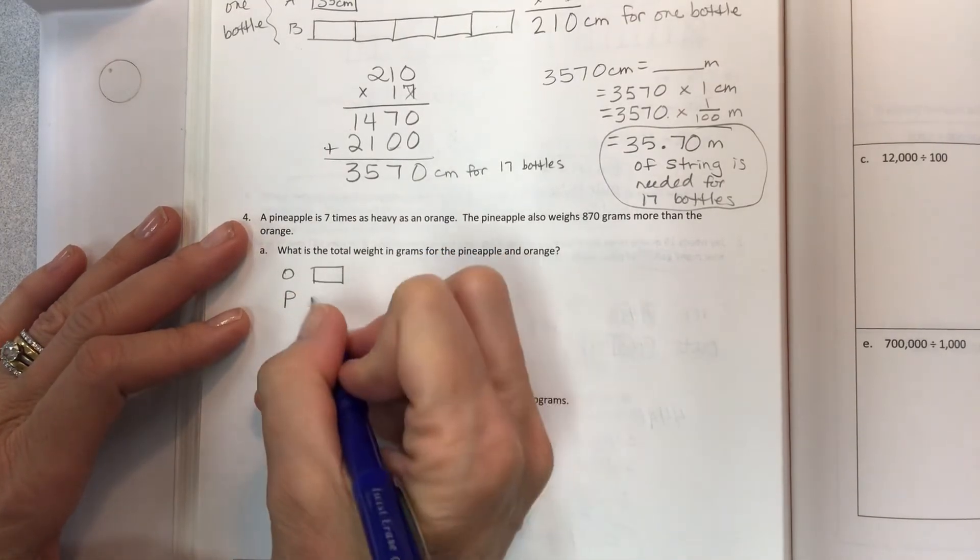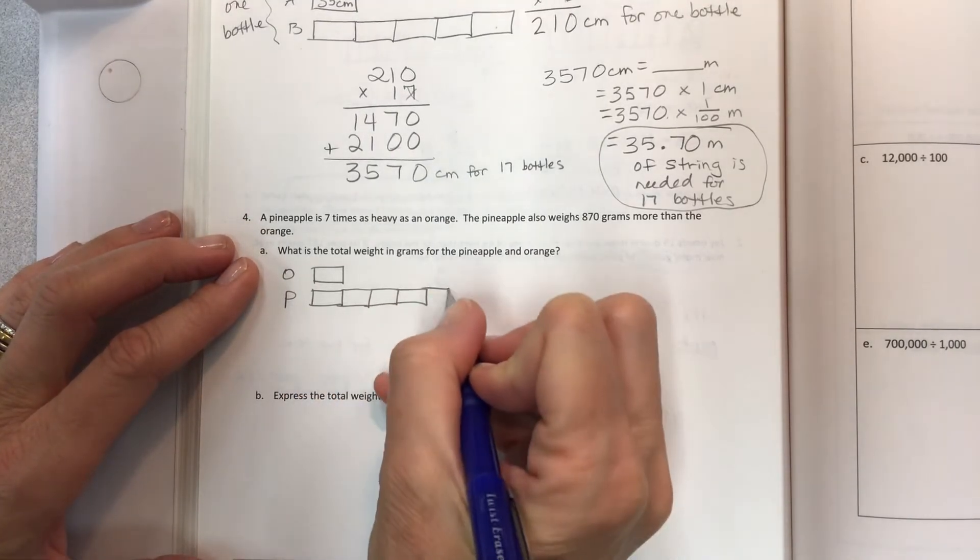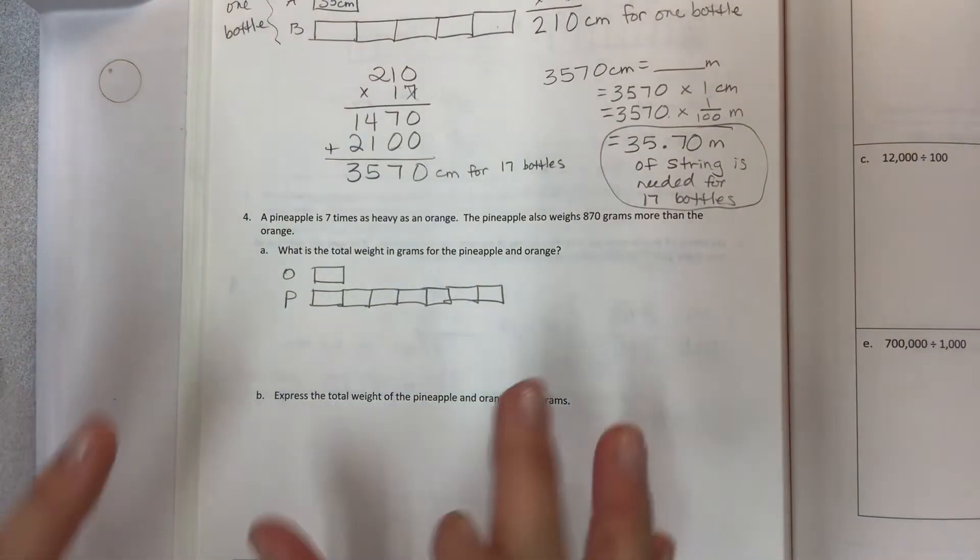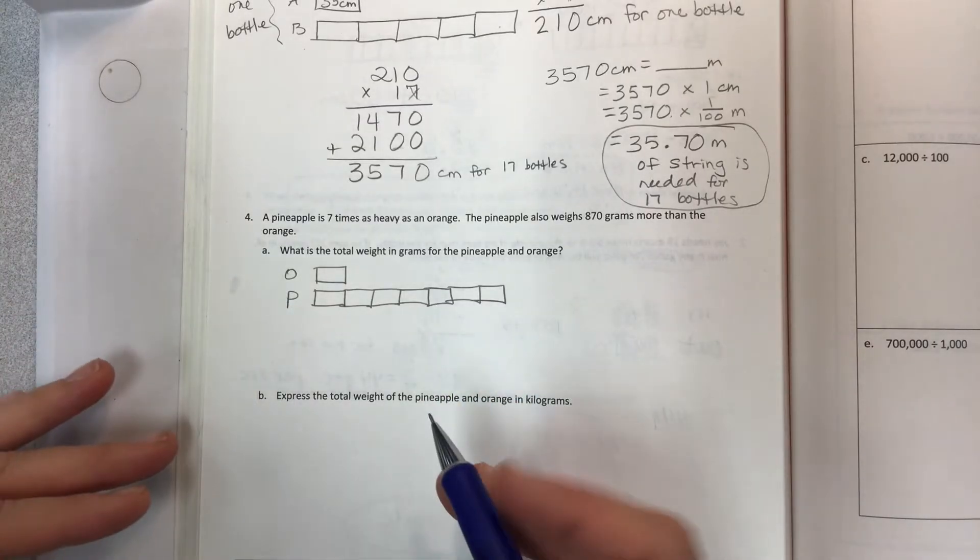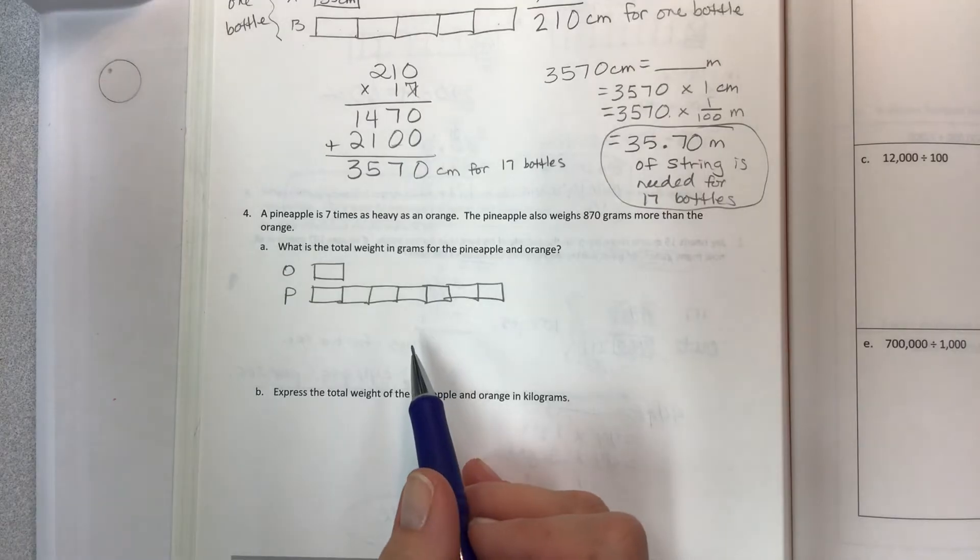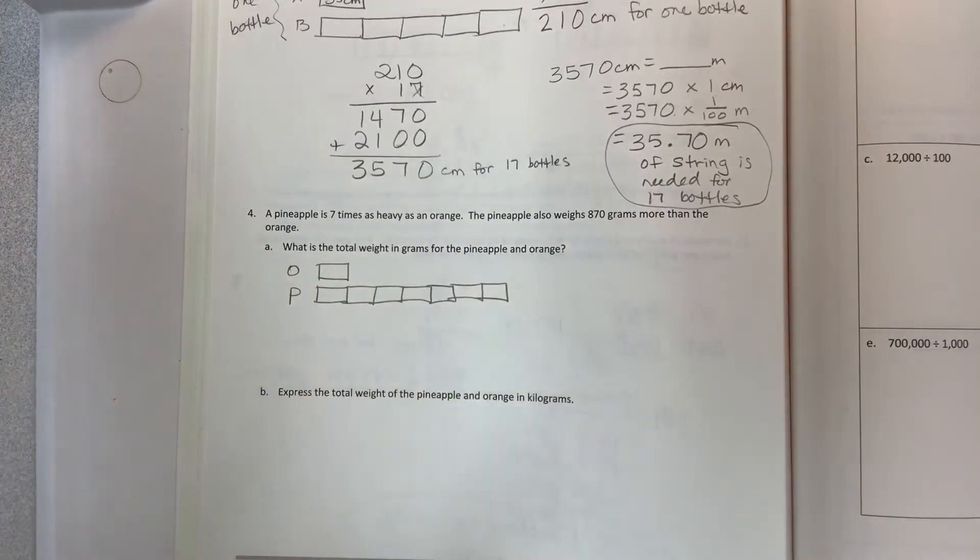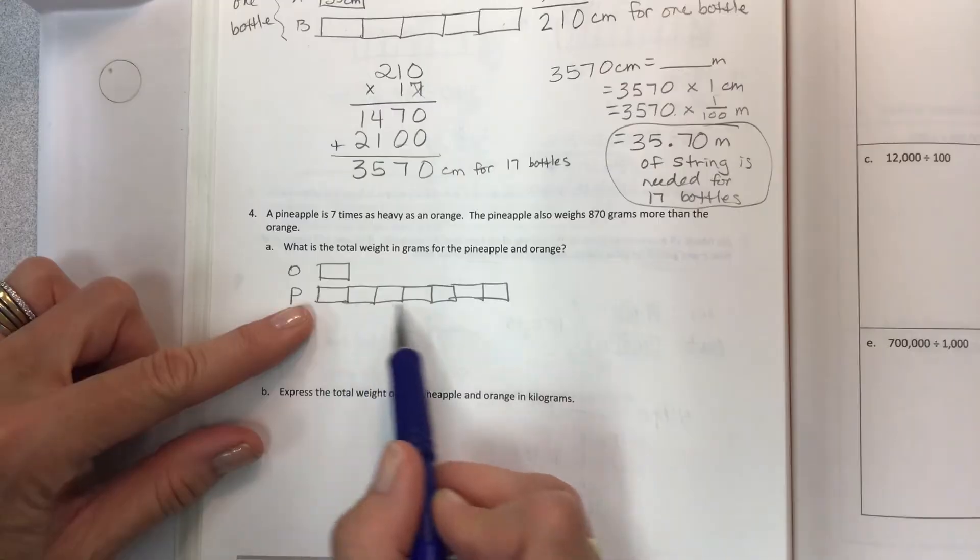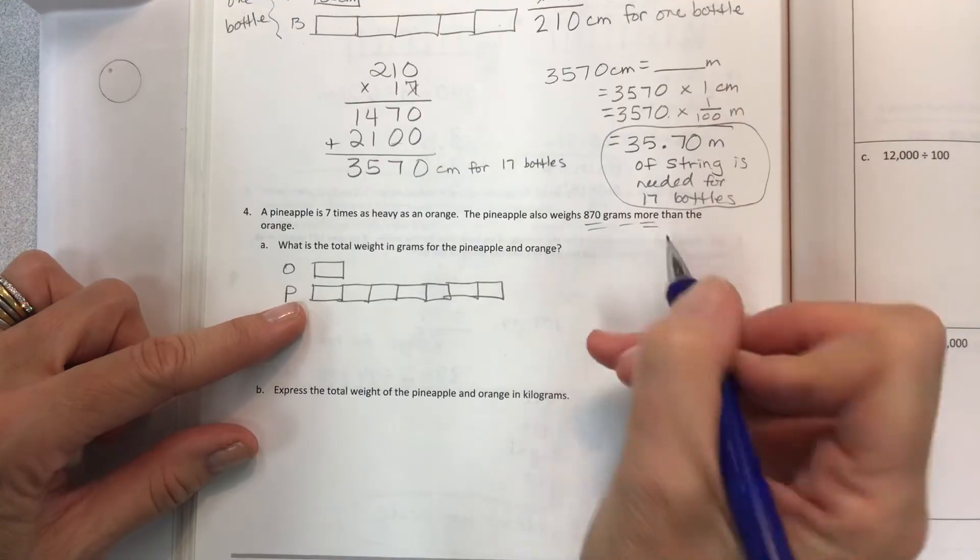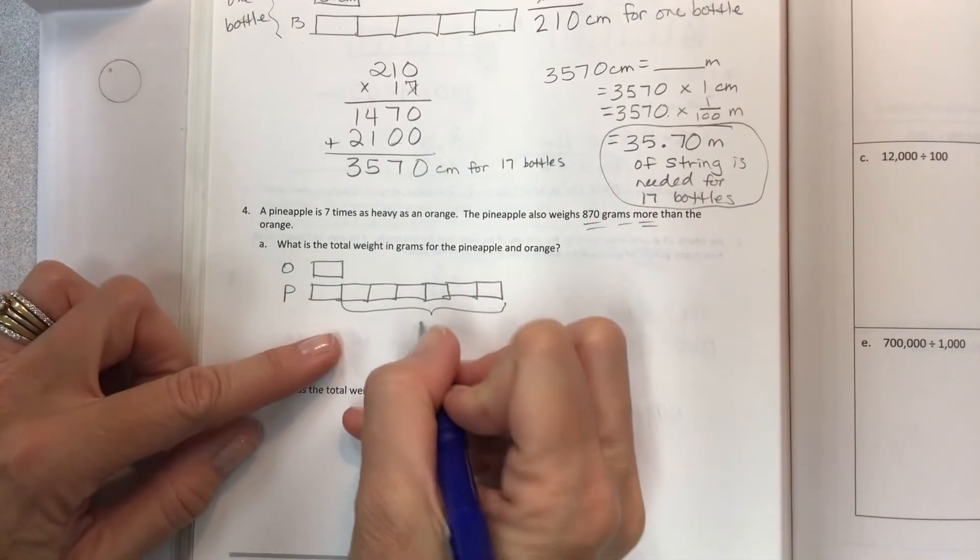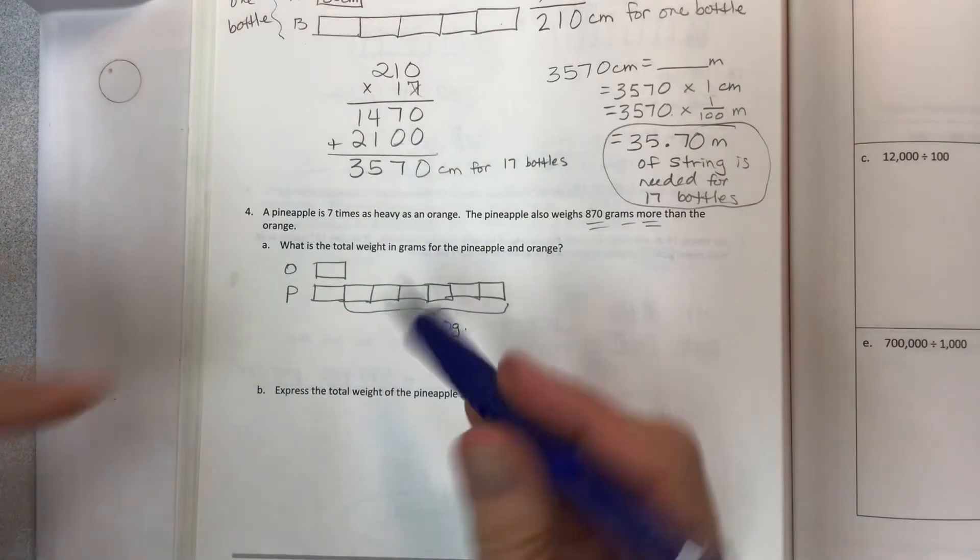A pineapple is seven times as heavy as an orange. Here's the orange. Here's the pineapple. Here's the orange with one. Here's the pineapple. One, two, three, four, five, six, seven. So this tape diagram is that kind of missing piece that I would need in order to solve it. And I just can't quite get there. But now you know, now you know how to solve these. So if a pineapple is seven times as heavy as an orange and the pineapple also weighs this much more, the only the more is going to be 870 grams right here. Then what is the total weight in grams for both?